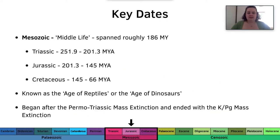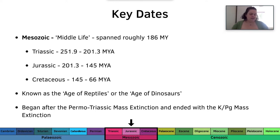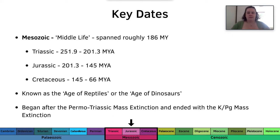The key dates of dinosaurs ruling the world was the Mesozoic. The Mesozoic means 'middle life' and spanned roughly 186 million years. It's also known as the Age of Reptiles, a phrase coined by Gideon Mantell in the 19th century during the time dinosaurs were being discovered. The Mesozoic contains three periods: the Triassic, Jurassic, and Cretaceous. It began after the Permo-Triassic mass extinction and ended with the Cretaceous-Paleogene mass extinction — so it started and ended with extinctions.